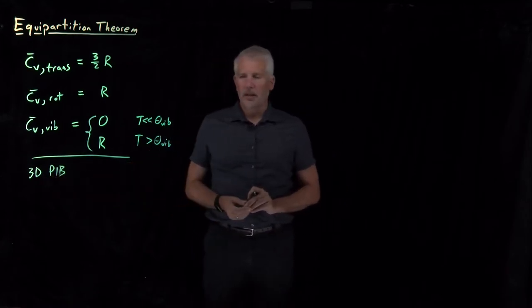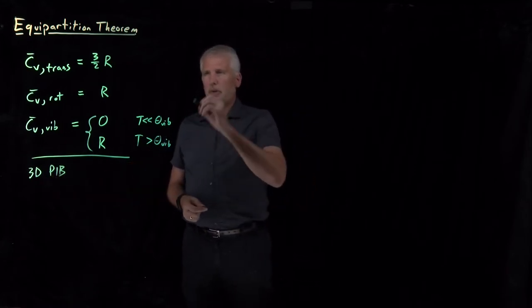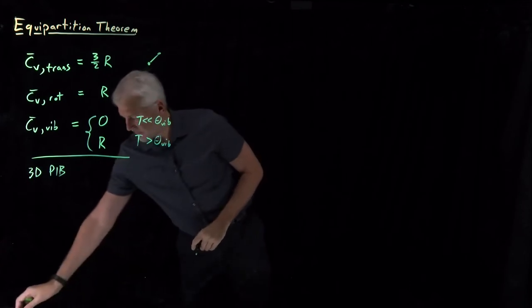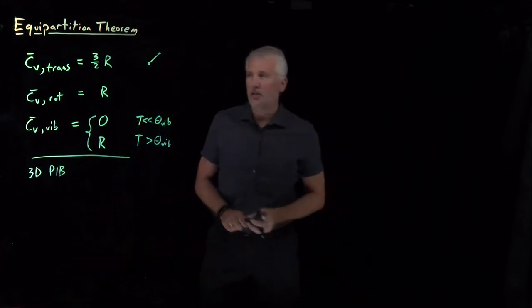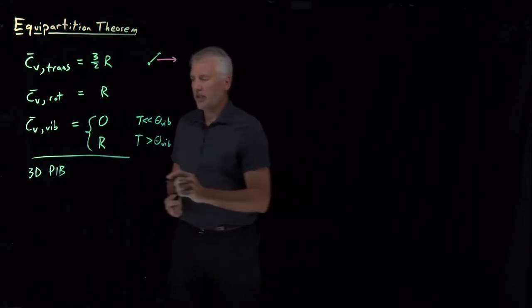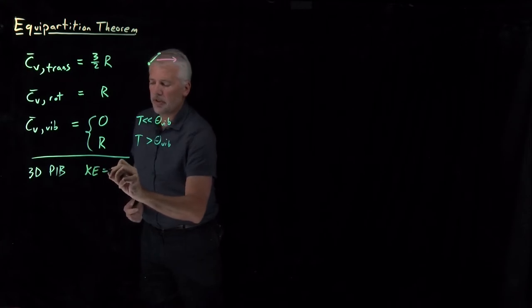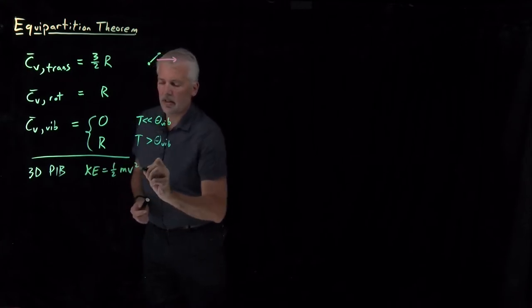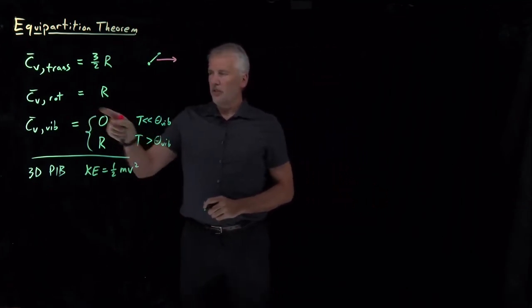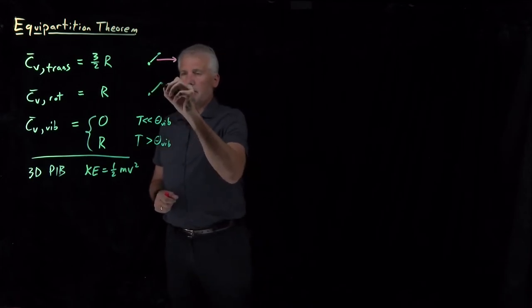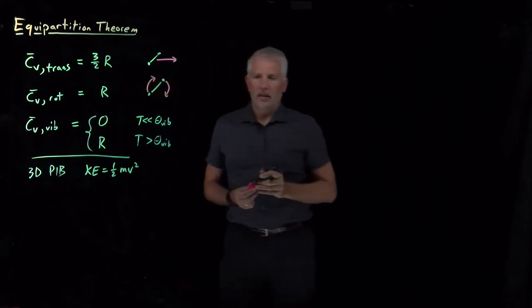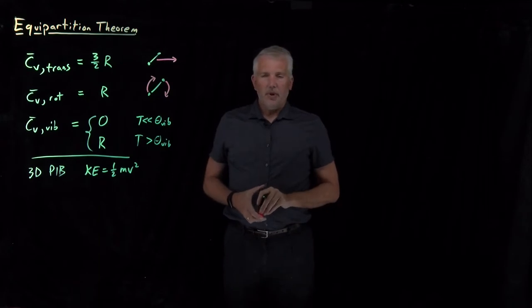The 3D particle in a box — we were modeling translational motion of a diatomic molecule. If it's translating, all we're modeling is that molecule moving through the air in some direction, maybe the X, Y, or Z direction. It has only kinetic energy, no potential energy, and that kinetic energy classically we think of as one-half mv squared. The rotational energy of the molecule, on the other hand, also has kinetic energy but no potential energy.